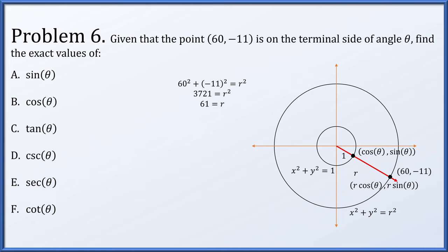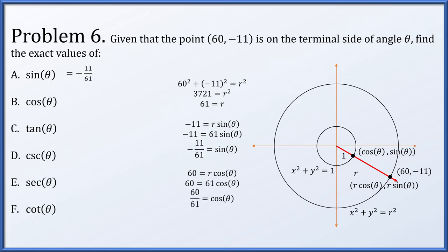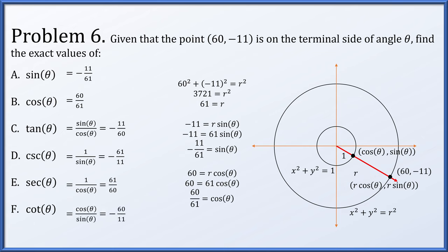The radii of our circle are always positive. So −11, the y coordinate, was going to be r times the sine of theta, and we've solved that r is 61. That allows us to solve that the sine of theta is −11/61. Similarly, we knew that 60 is r·cosθ, and r is 61, so the cosine of theta is 60/61. Now that we know the sine and cosine, everything else is fairly quick. The tangent of theta is sine divided by cosine, which is −11/60. The cosecant is 1 over the sine. The secant is 1 over cosine. And the cotangent is cosine divided by sine, so we reciprocate the tangent.